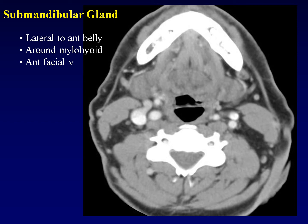Another important aspect of the submandibular triangle is the anterior facial vein. The anterior facial vein runs between the submandibular gland and the lymph nodes of the submandibular triangle. If you have a mass in this vicinity and aren't sure whether it arose from a lymph node or from the gland, you can look for displacement of the anterior facial vein — displaced forward indicates a gland mass; if it still lies between the mass and the gland, the mass arose from a node.